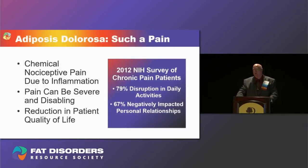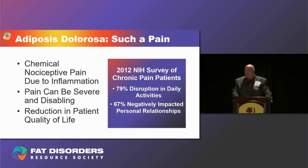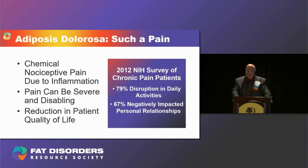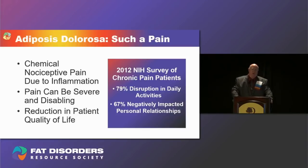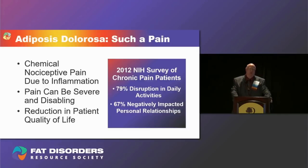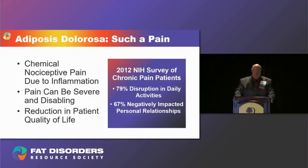Few patients who have this condition would argue that having it is really quite a pain — because one of the things that inflammation does is cause what's called chemical nociceptive pain, among other types. The pain in Dercum's disease can be severe, disabling, and can reduce the patient's quality of life. In a 2012 NIH survey of patients experiencing chronic pain, a majority reported that pain disrupted their daily life activities and had a negative impact on their personal relationships.